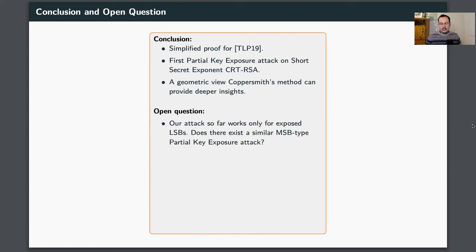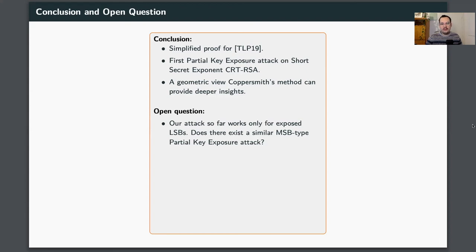I would like to end with an open question. Our attack only works for exposed least significant bits. Partial key exposure attacks on plain RSA usually work for both most significant bits and least significant bits. We tried quite a few things to make our attack work for exposed most significant bits, but the techniques used in partial key exposure attacks on RSA don't seem to translate to CRT-RSA. Some new techniques still need to be invented to obtain an MSB-type partial key exposure attack on CRT-RSA — and that might be worth looking into. Thank you very much for listening.